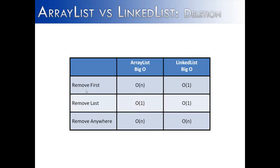What I have done next is shown the ArrayList and LinkedList in a table to directly compare the Big O of each. We are comparing the three functions: removing first, removing last, and removing anywhere. Removing anywhere has the same Big O of N for both. Removing last also has the same Big O of constant time, or 1. The big difference is in removing the first node — a LinkedList has a Big O of constant time while an ArrayList has a Big O of N. The LinkedList would be superior in this circumstance. So if you have a data structure where you need to remove an item from the front, like a queue, a LinkedList would be the better option.